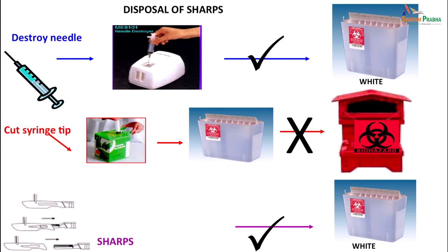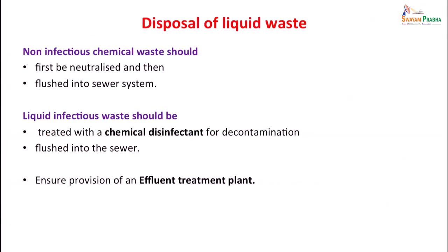Sharps should be put in a needle destroyer and placed in the white container. You should not try to cut the syringe tip as that will lead to injuries. They can be straight away disposed of directly into the white container. Similarly, all sharps must be placed straight into the white container.